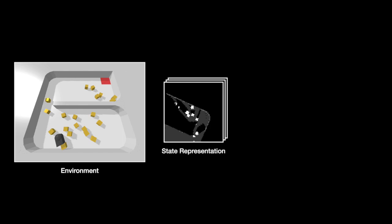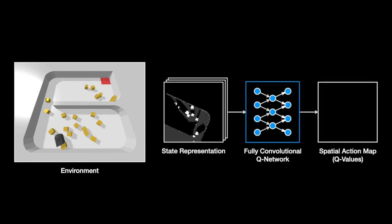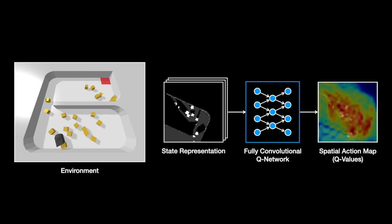At every step, the agent feeds the state image into a fully convolutional network to produce a dense pixel-aligned Q-value map, which encodes the expected future reward of moving to every endpoint location. The agent then finds the action that maximizes expected future reward and executes it.